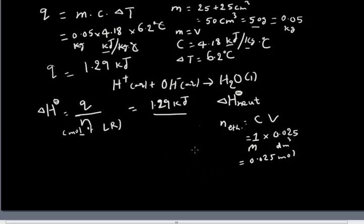If I do the same thing for the number of moles of NaOH, it's CV again, and the concentration is 1 M, and the volume is 25 mL, which translates to 0.025 dm³. So the moles is 0.025 mol.